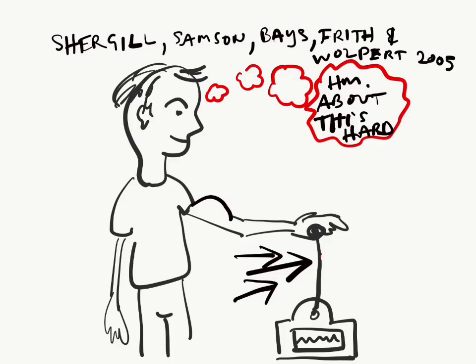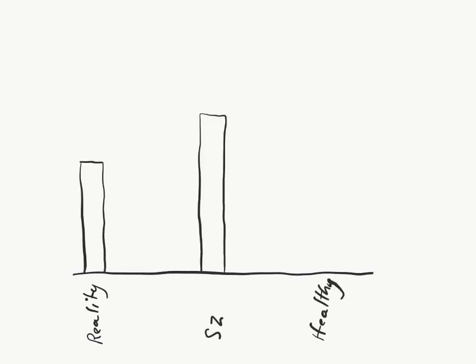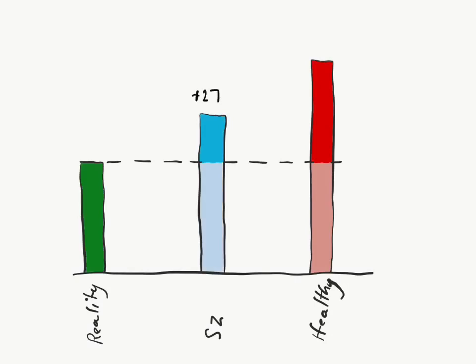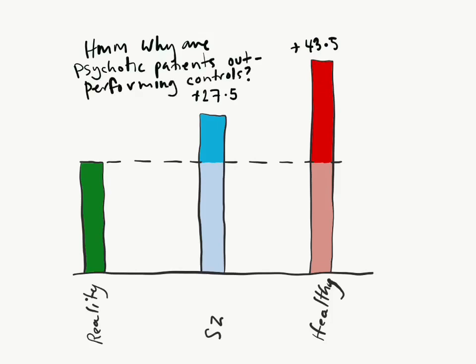But schizophrenic patients underestimated those efforts by only 27.5%, whereas controls underestimated them by 43.5%. This underestimation of one's own force, one's own impact on the world, appears to be a factor in mental health. The difference of nearly 63% is indeed significant.